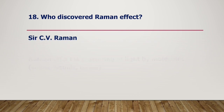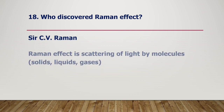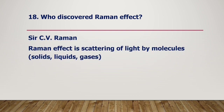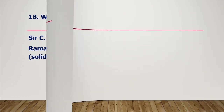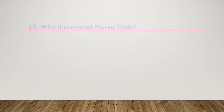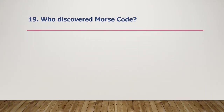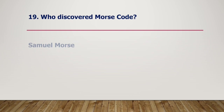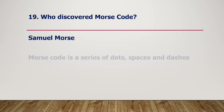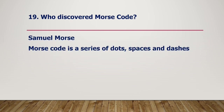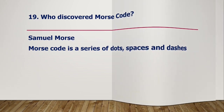Who discovered the Raman effect? C.V. Raman. The Raman effect is the scattering of light by molecules in solids, liquids, gases, etc. Who discovered Morse code? Samuel Morse. Morse code is a series of dots, spaces, and dashes.